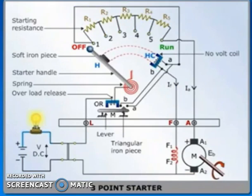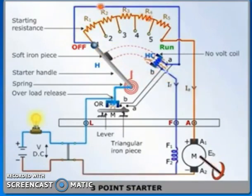Now assume the handle H touches stud one. The shunt field and the holding coil HC get connected in series across the supply, whereas the armature gets connected in series with the entire starting resistance. Current begins to flow in both field and armature windings, and the motor starts rotating.